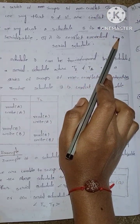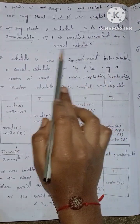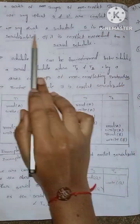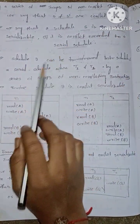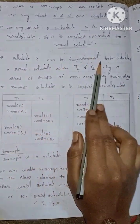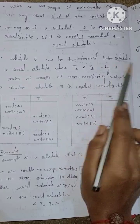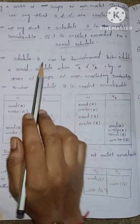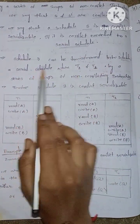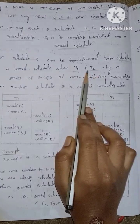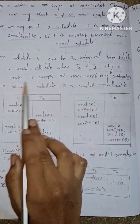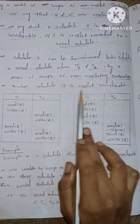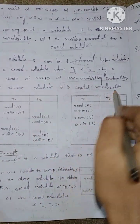This is a serial schedule, so we say that conflict is serializable. Schedule 3 can be transformed into schedule 6. This serial schedule is T2 followed by T1, by a series of swaps of non-conflicting instructions. Therefore, schedule 3 is conflict serializable.